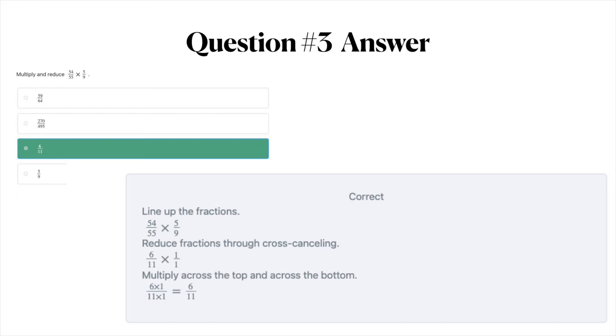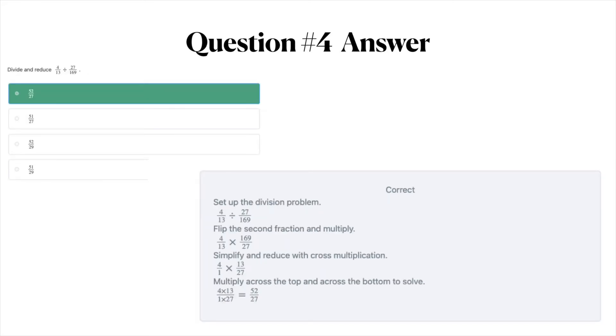Moving on to the answer for question number four. The answer to question number four is A, 52 over 27. First in this problem you'll set up the division problem. Then you'll flip the second fraction and multiply. Next you'll simplify and reduce by cross multiplication. As you can see here in this answer explanation. And finally you'll multiply across the top and across the bottom to solve.